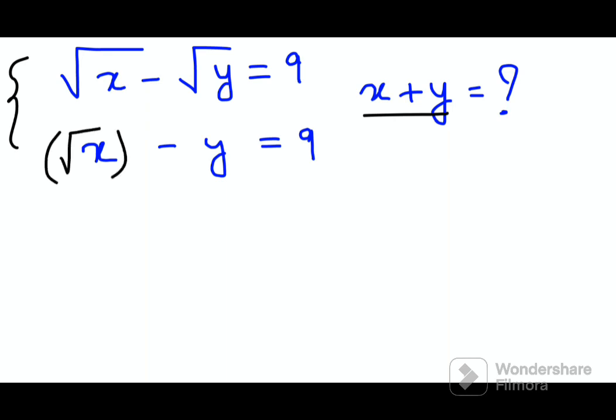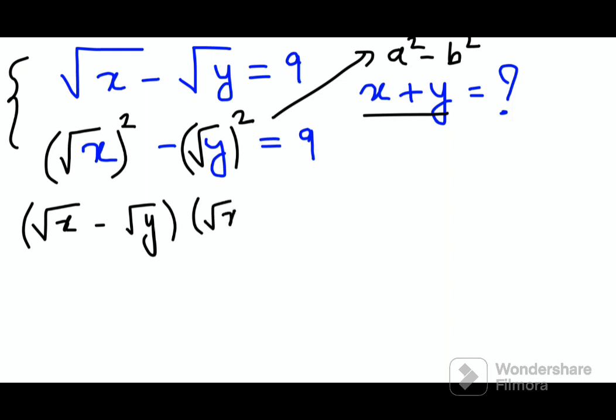So something like this looks quite tricky but trust me it's very simple. Here if you see, I can write this as nothing but root of x the whole square and root of y the whole square, correct? And this looks very similar to a square minus b square. So let's write this down. Root of x minus root of y, that is the expansion, and root of x plus root of y equals 9.